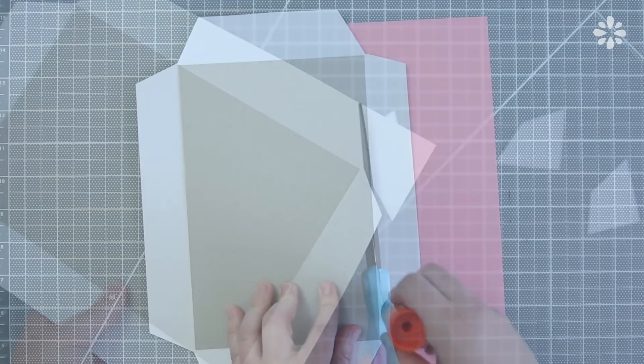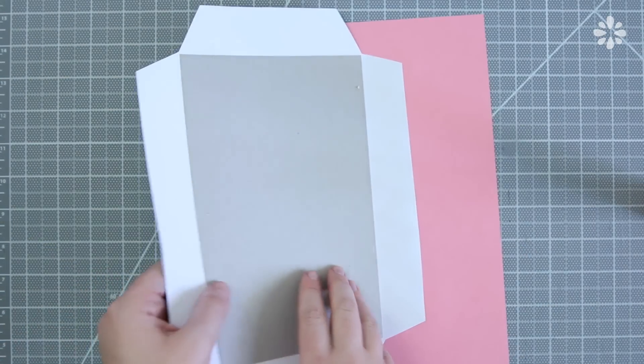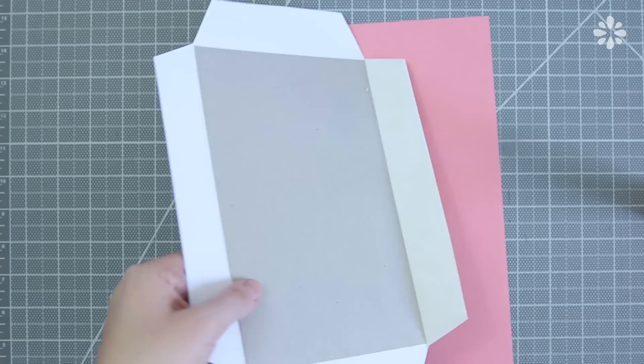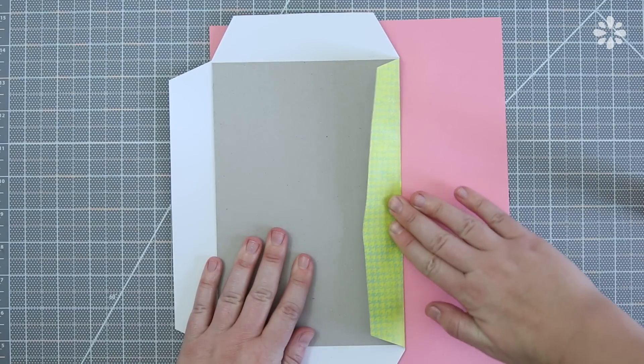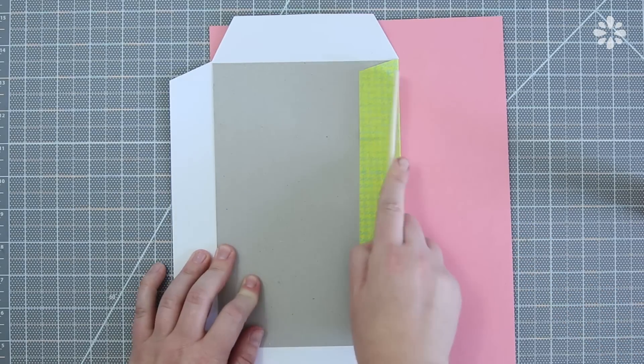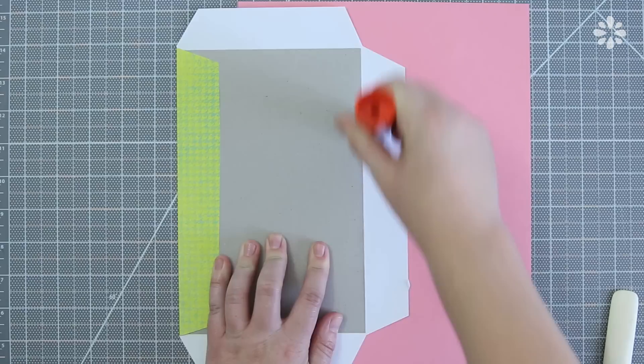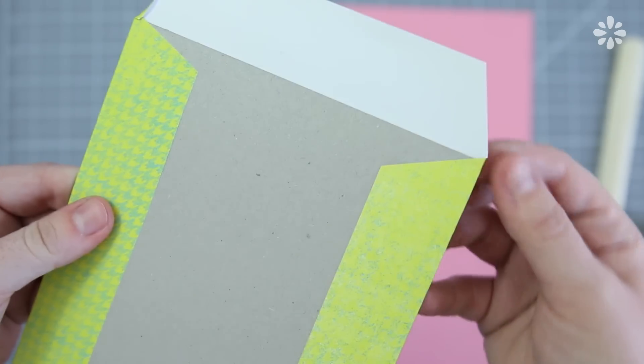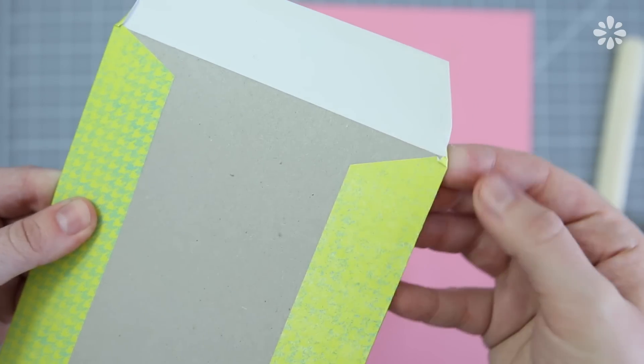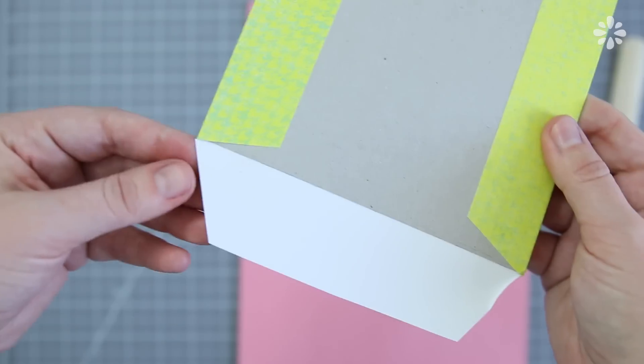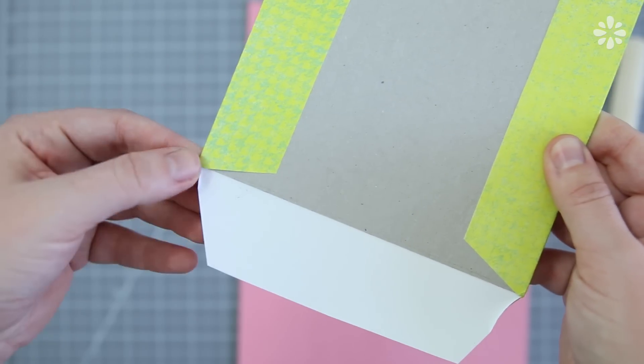Then glue the flaps of paper over, and I like to fold it over just like this so that it makes a clean edge. You can also press this down with a bone folder. When you get to the corners, you want to pinch that little gap of paper that you left, and this will ensure that the tip of the cardboard is covered.